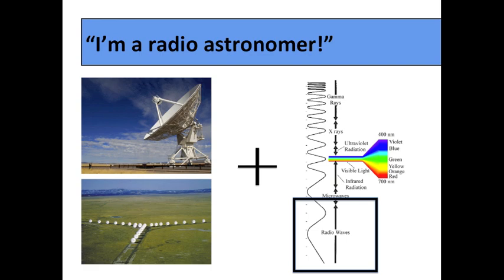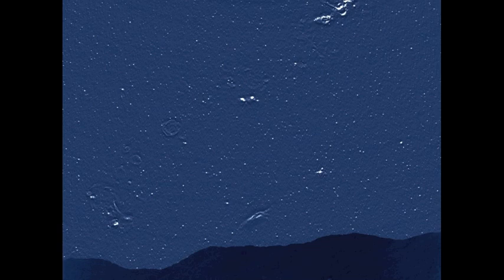So we take our radio telescopes, we point them to the night sky, and we see this. This is what the sky looks like in the radio. Now you might look at this and think, oh yeah, I see. This is basically what the sky looks like normally, right? All the little dots are stars.